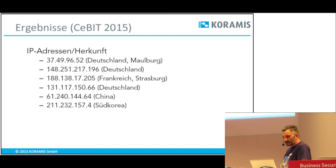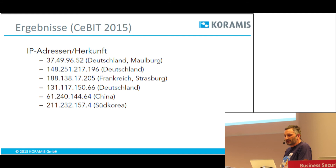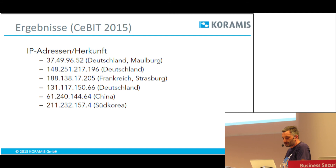Die IP-Adressen: Woher kamen die Angriffe? Auch das habe ich heute analysiert. Viele fragen immer, woher die Vielzahl der Angriffe kam. Überraschend: Auf Platz 1 ist Deutschland. Wir haben drei Angriffe direkt aus Deutschland — aber auch hier können es theoretisch Proxies sein. Ein Angriff kam aus Straßburg, Frankreich. Ein Angriff kam aus China. Und der letzte Angriff gegen die PLC kam aus Südkorea. Das ist allerdings nur ein Abbild für den heutigen Tag und hat keinen Anspruch auf Vollständigkeit.